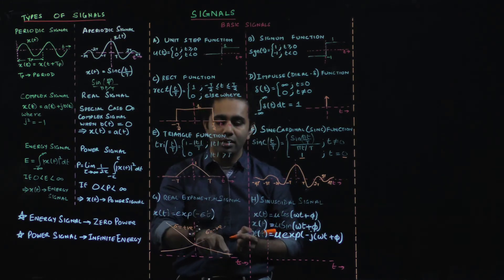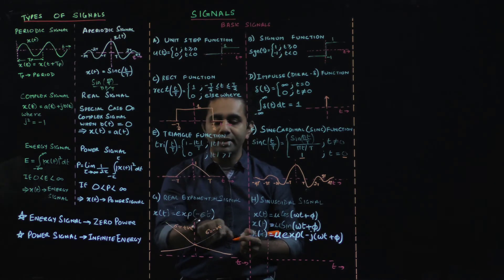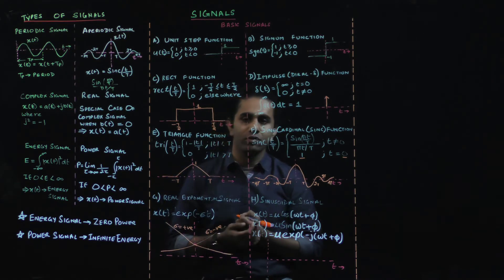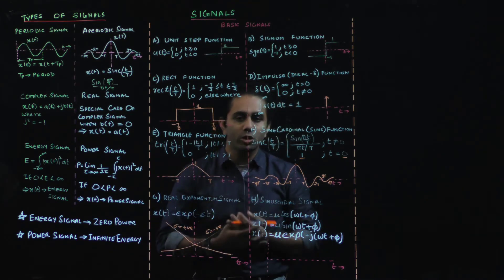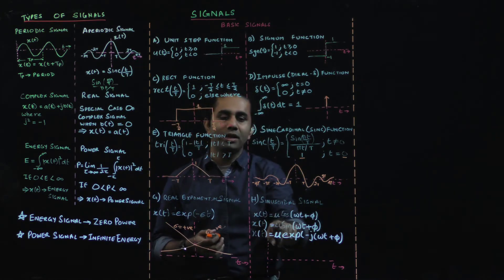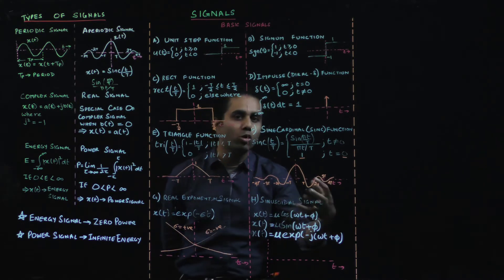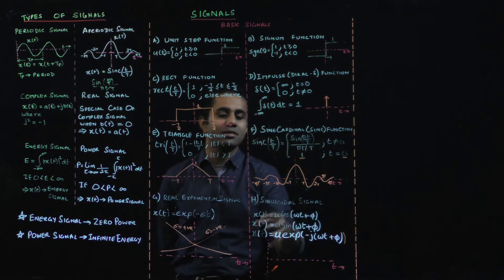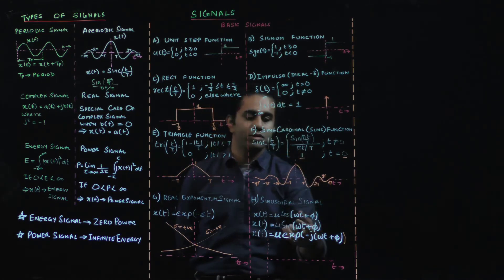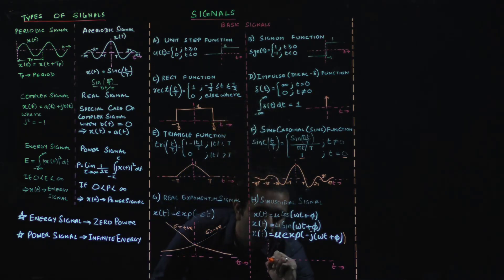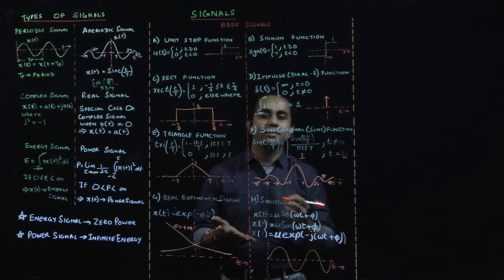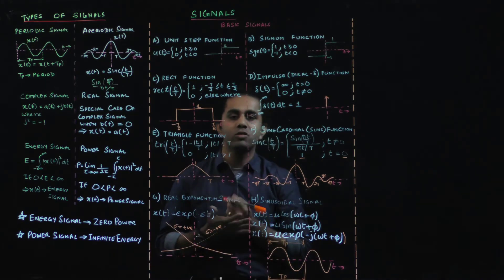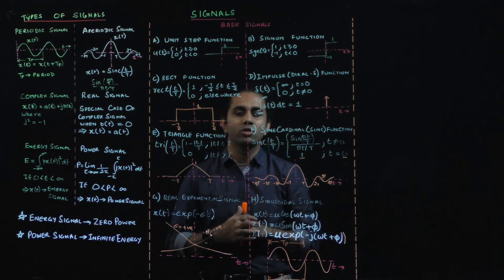For both waveforms of the real exponential: when σ is negative, as t tends to infinity the value tends to infinity, while as t tends to minus infinity the value tends to 0, and vice versa when σ is positive. Finally, a sinusoidal signal can be represented as x(t) = A·cos(ωt + φ), A·sin(ωt + φ), or A·e^(jωt + φ). All three can represent any sinusoidal signal, with a fundamental period Tp defining the waveform.